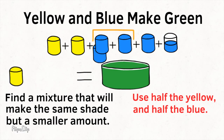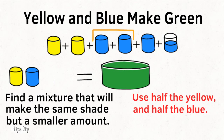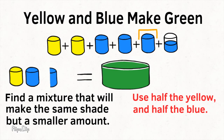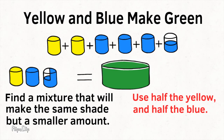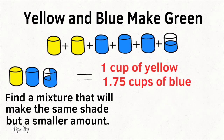Half of 3.5 cups of blue would be 1.75 cups of blue. Half of this one cup of blue would be half a cup of blue, and half of this half a cup of blue would be a quarter cup. So the new mixture would be one cup of yellow paint and 1 and 75 hundredths of a cup of blue paint, or 1 and 3 fourths cups of blue paint.